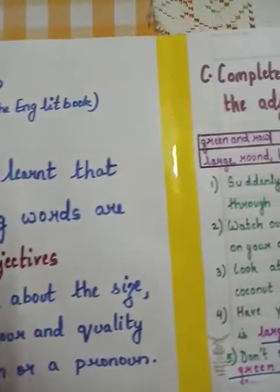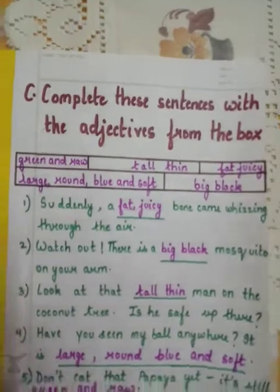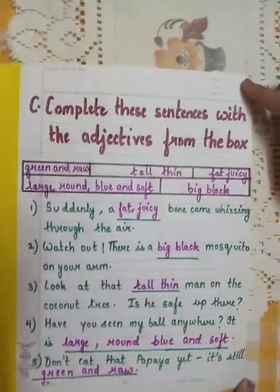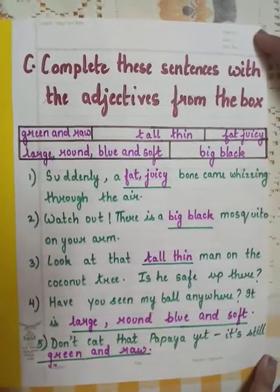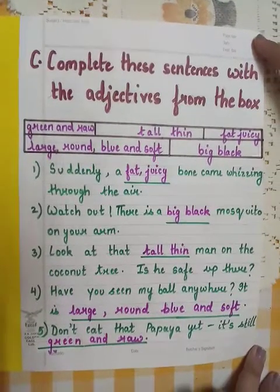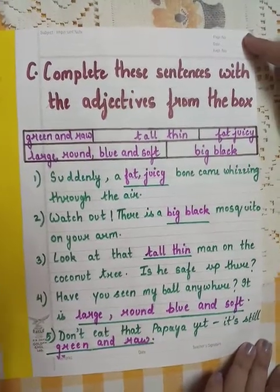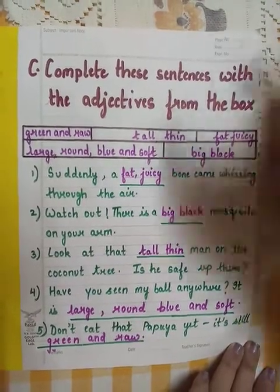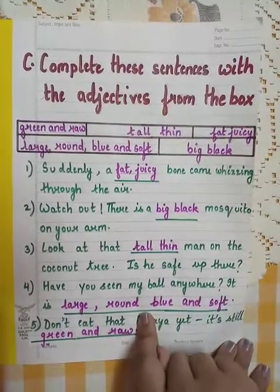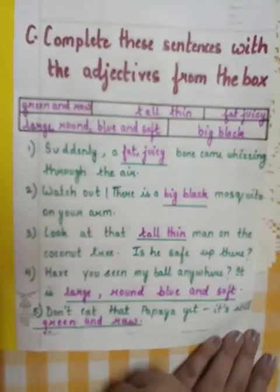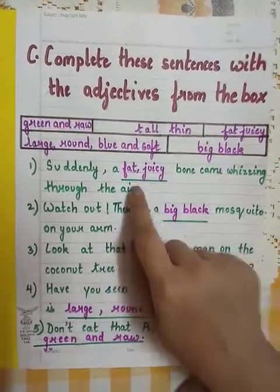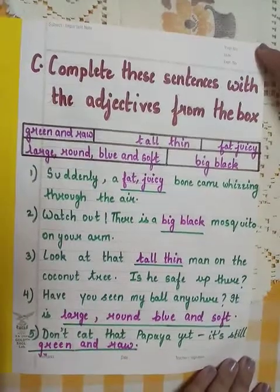Now let us come to the exercise — that is Exercise C in your English literature book. Please come to Exercise C and take out a pencil and let us do it in the book itself. Complete these sentences with the adjective from the box. The adjectives are given in the box; we have to fill in the blanks with the adjectives from the box.